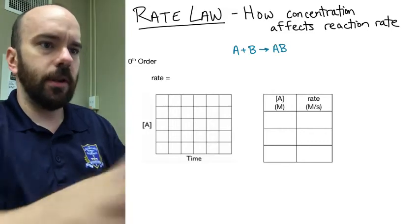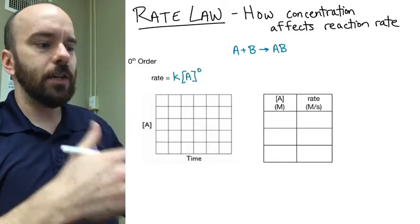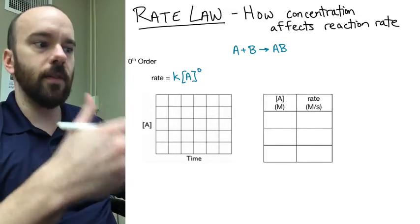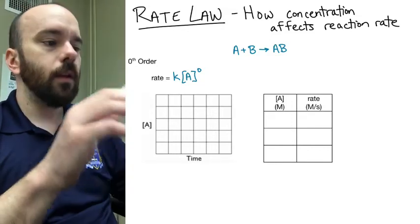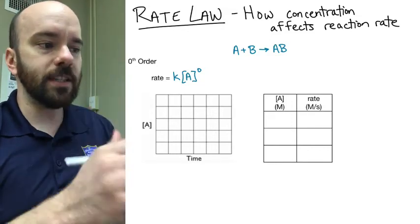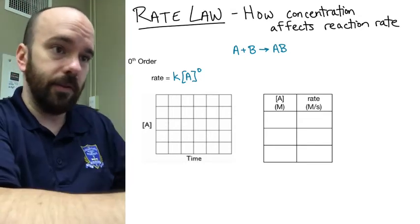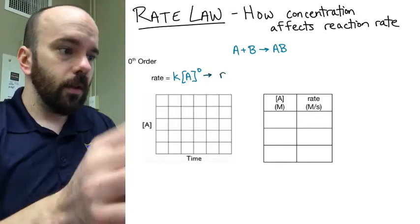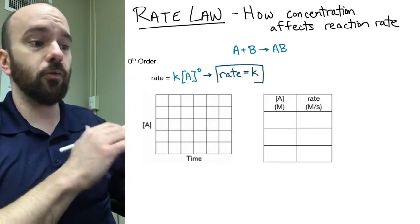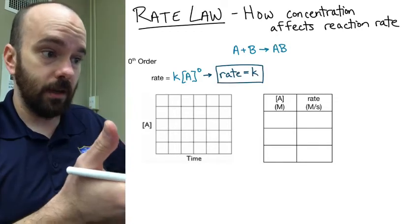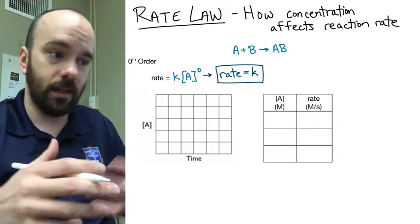For zeroth order, the rate equals K times the concentration to the power of zero, hence zeroth order. If you raise something to the power of zero it becomes one — anything to the power of zero is one. So this simplifies into rate equals K, and K is just a constant called the rate constant.